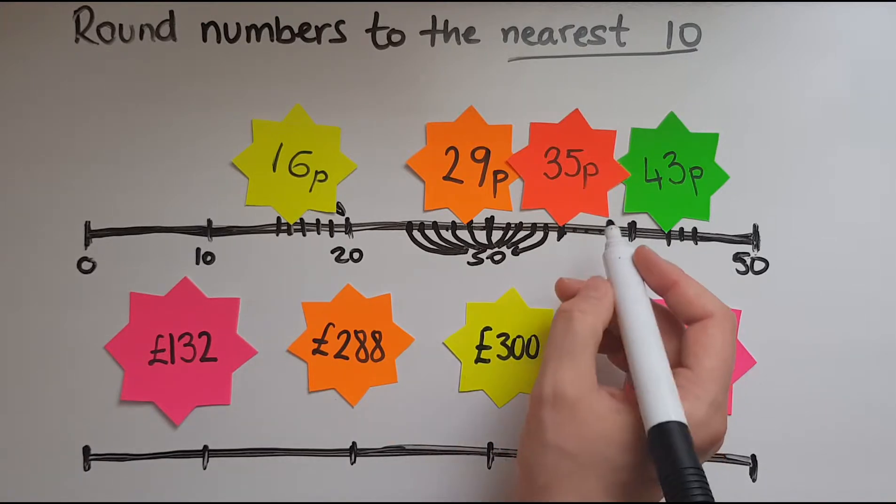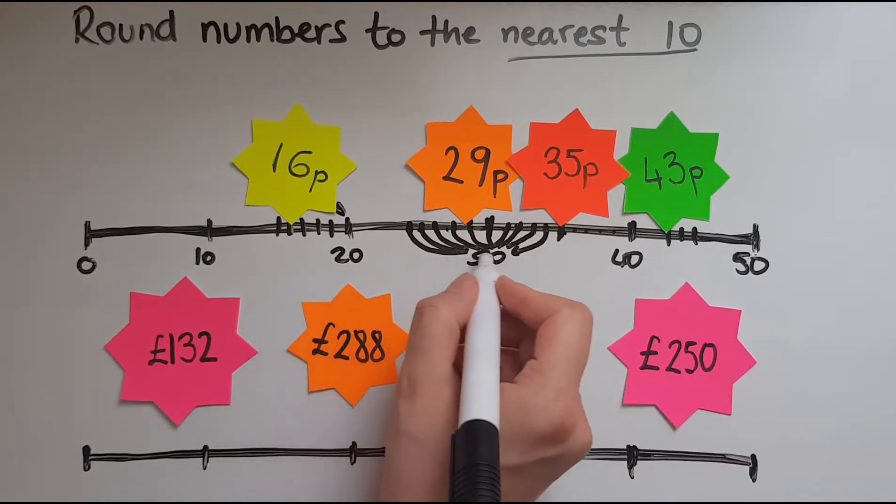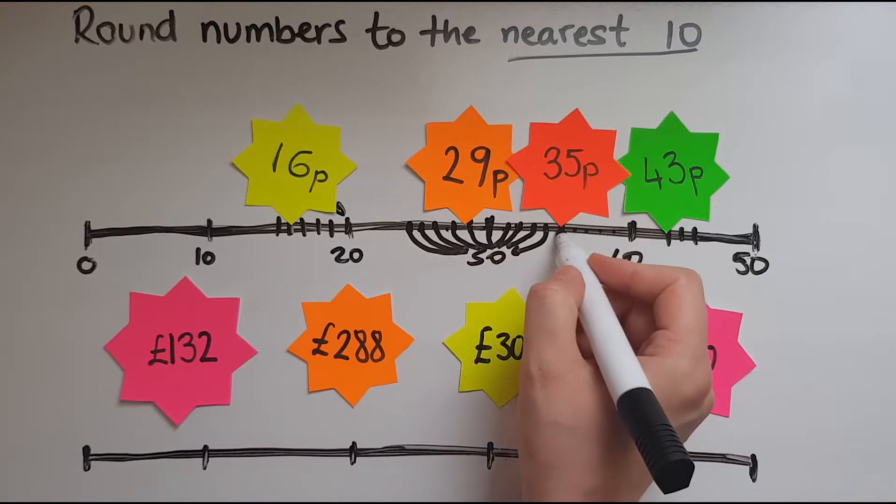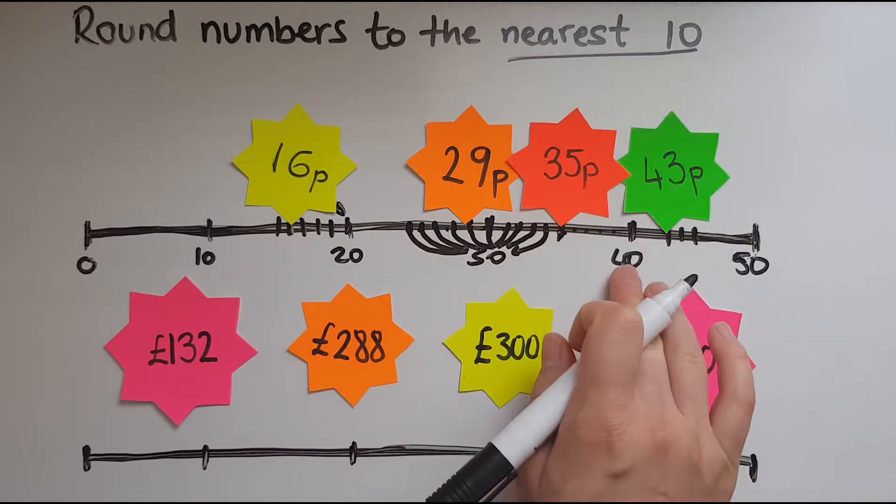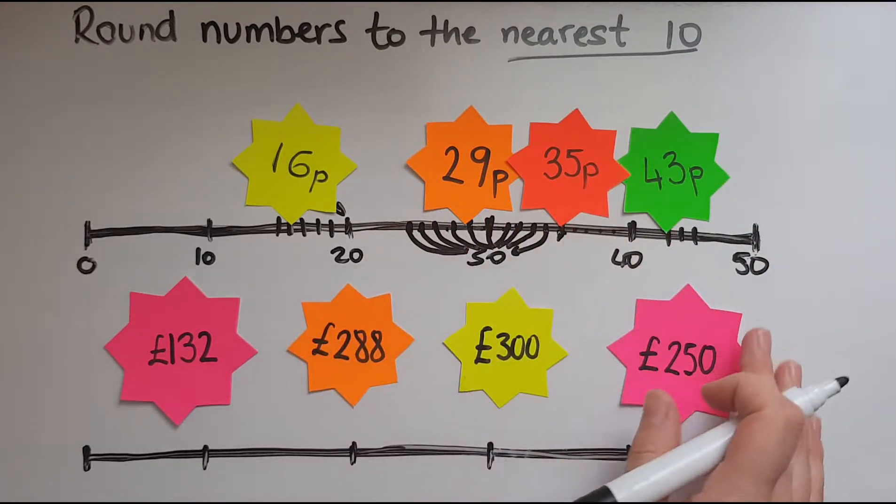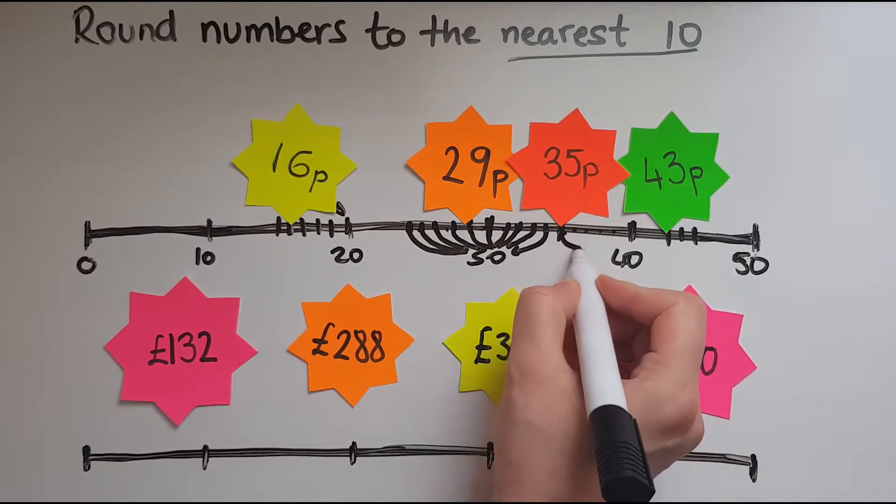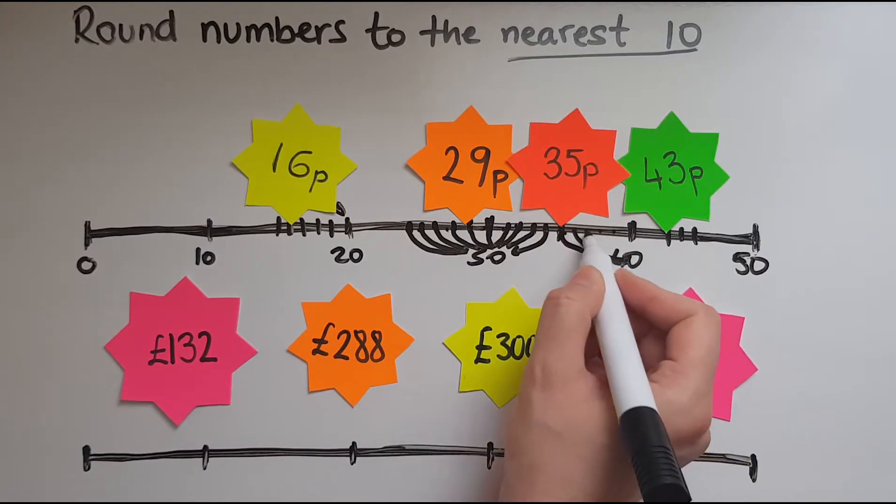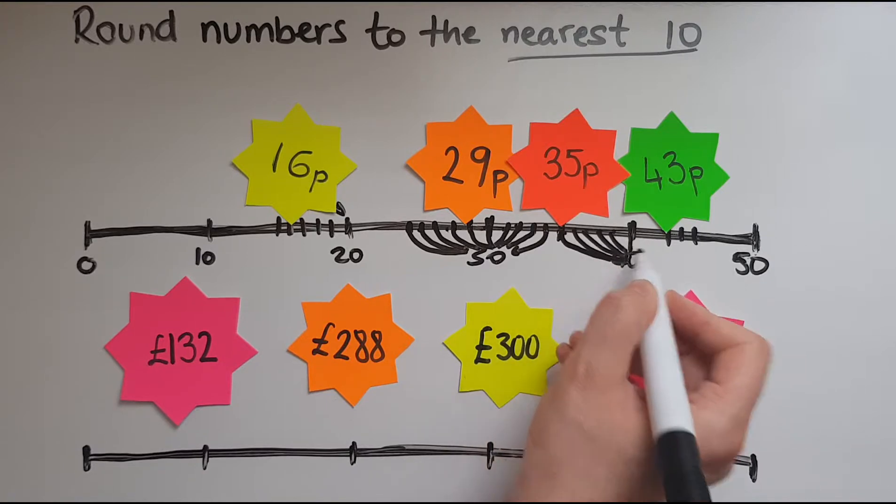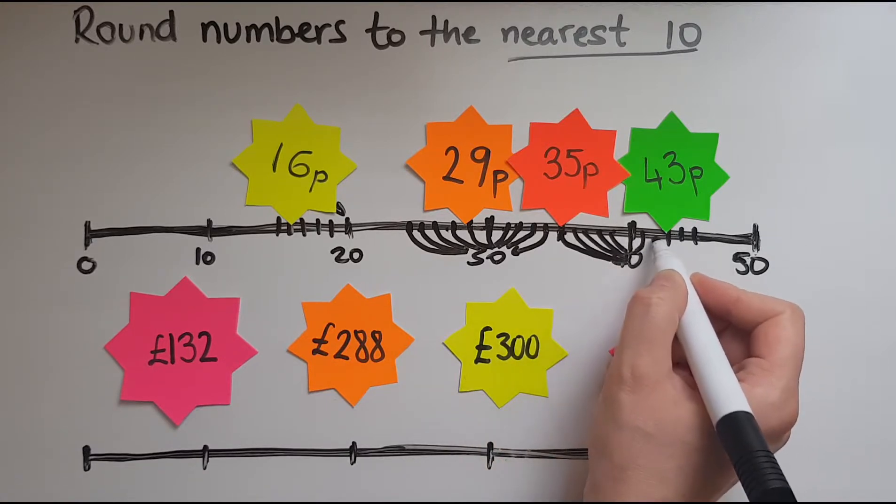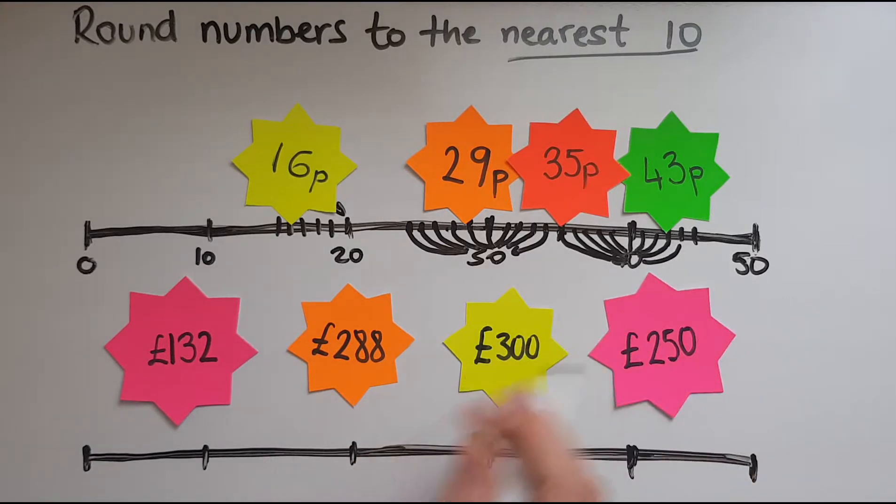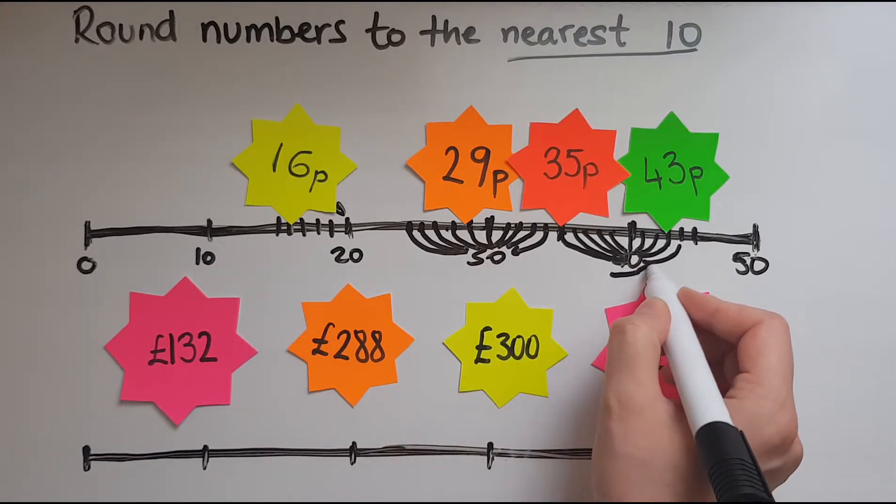Now since 25 was rounded to 30, now 35 will be rounded to 40 so these are rounded up. So we got 35, 36, 37, 38, 39, 40, 41, 42, 43 and 44 are rounded to 40.